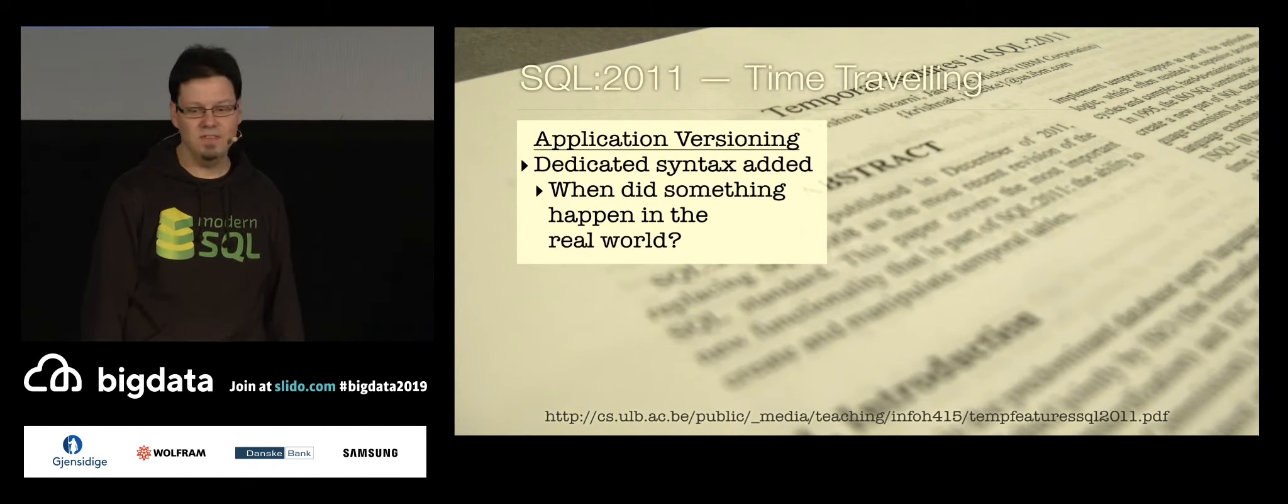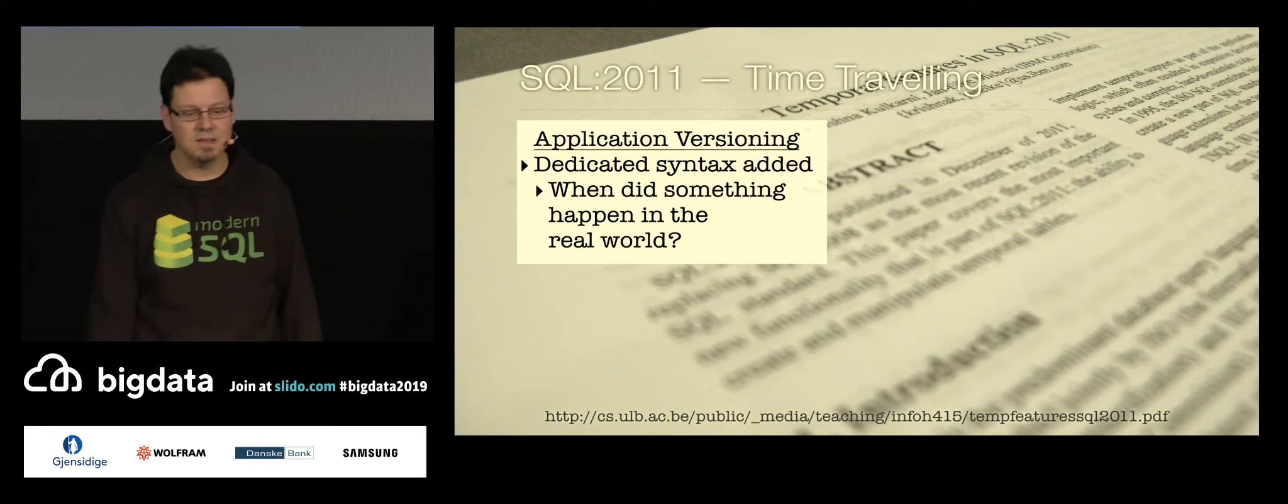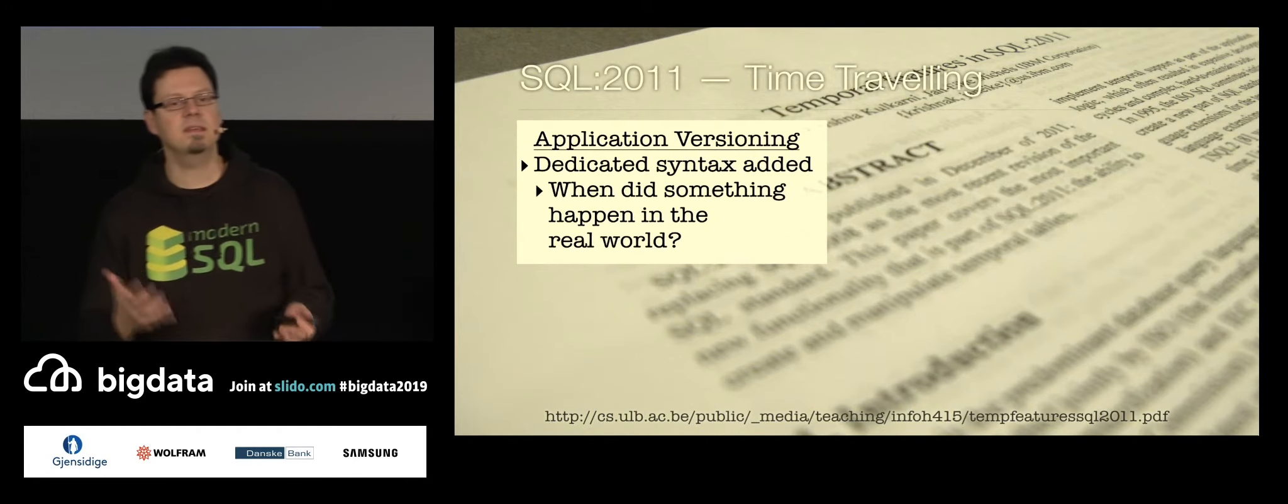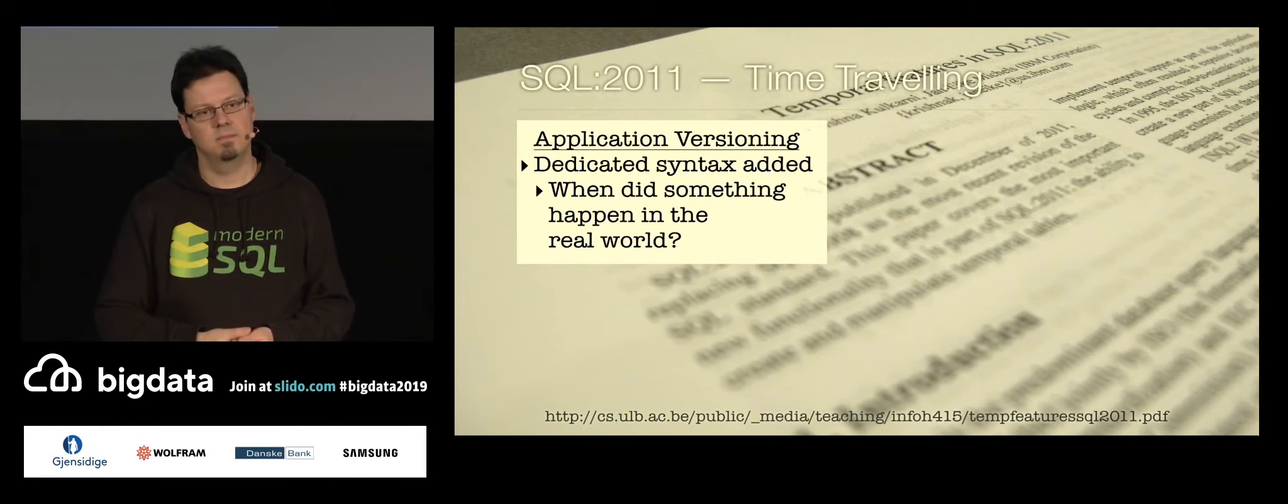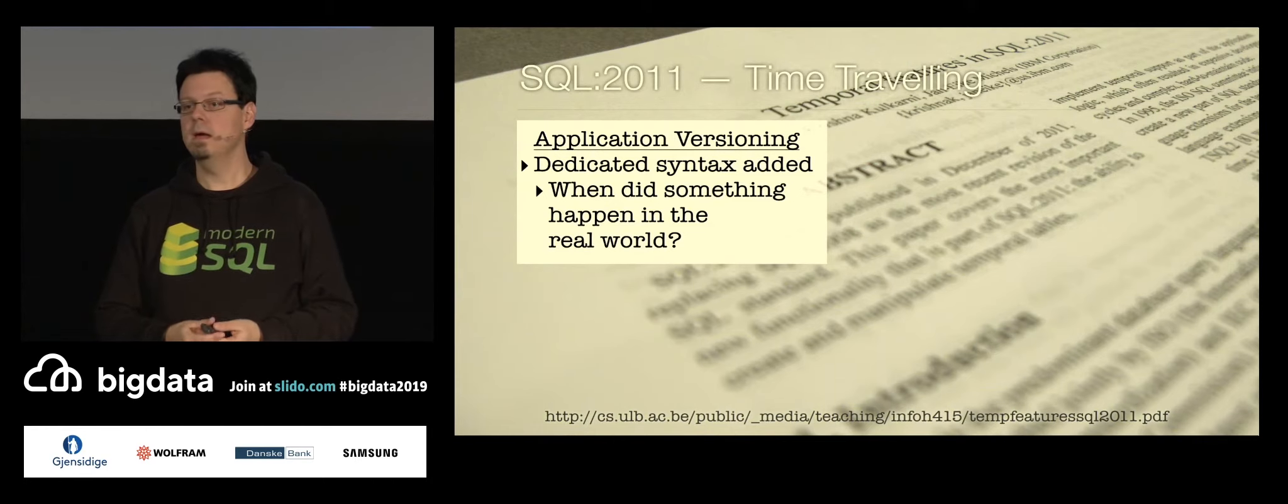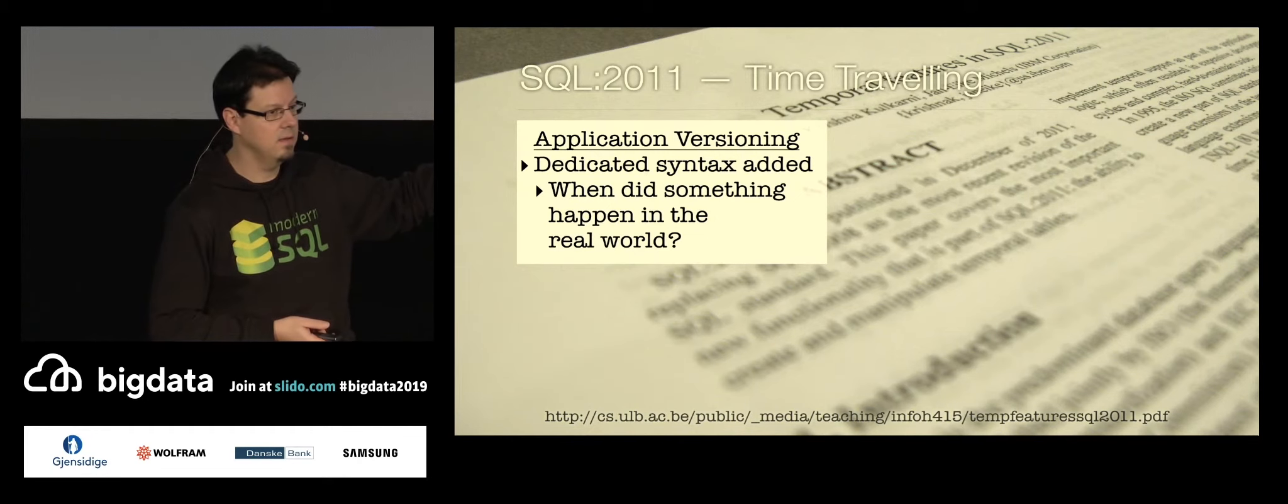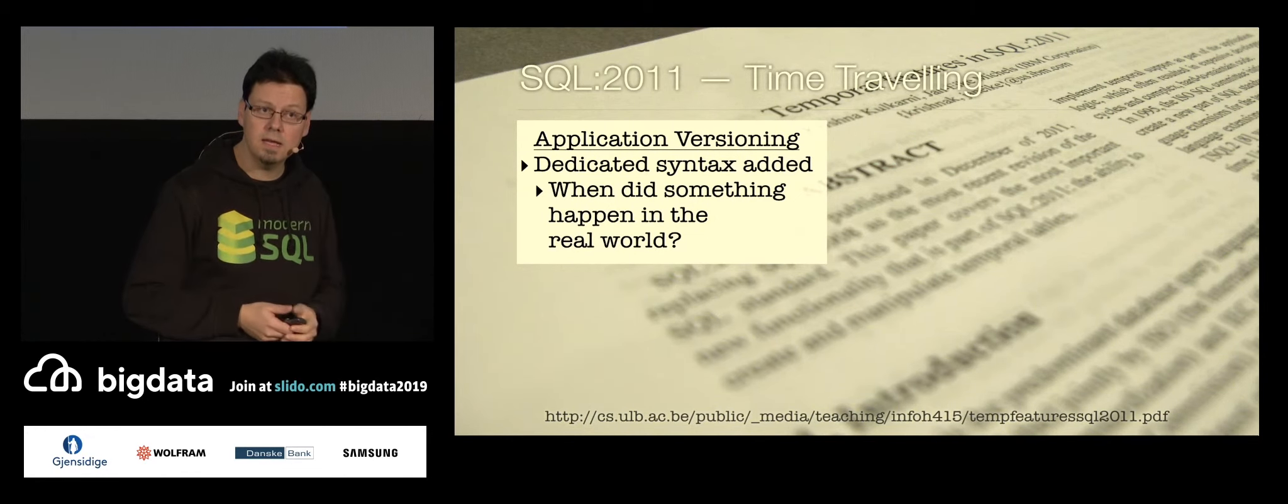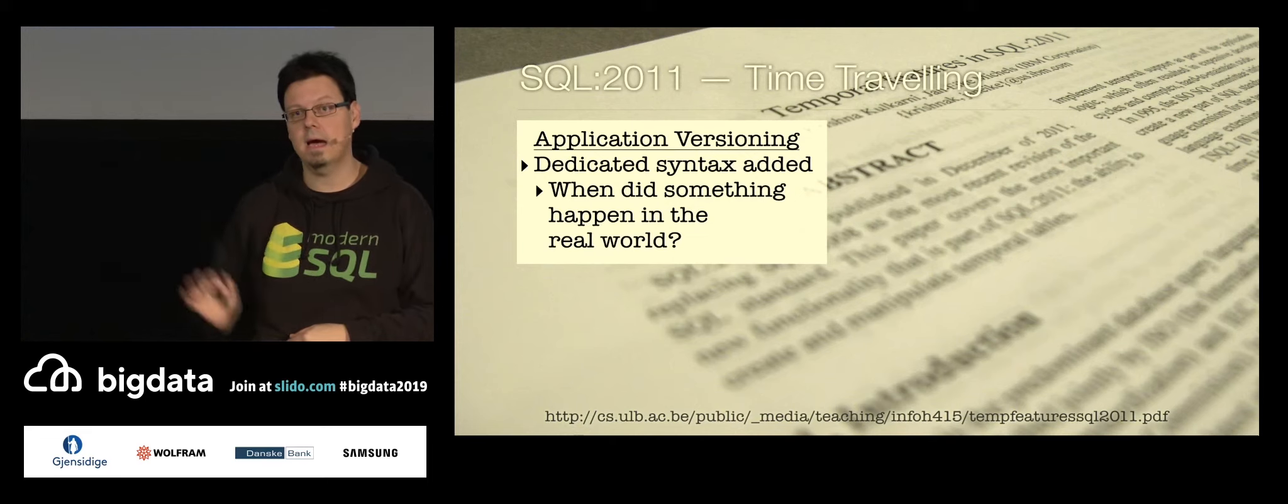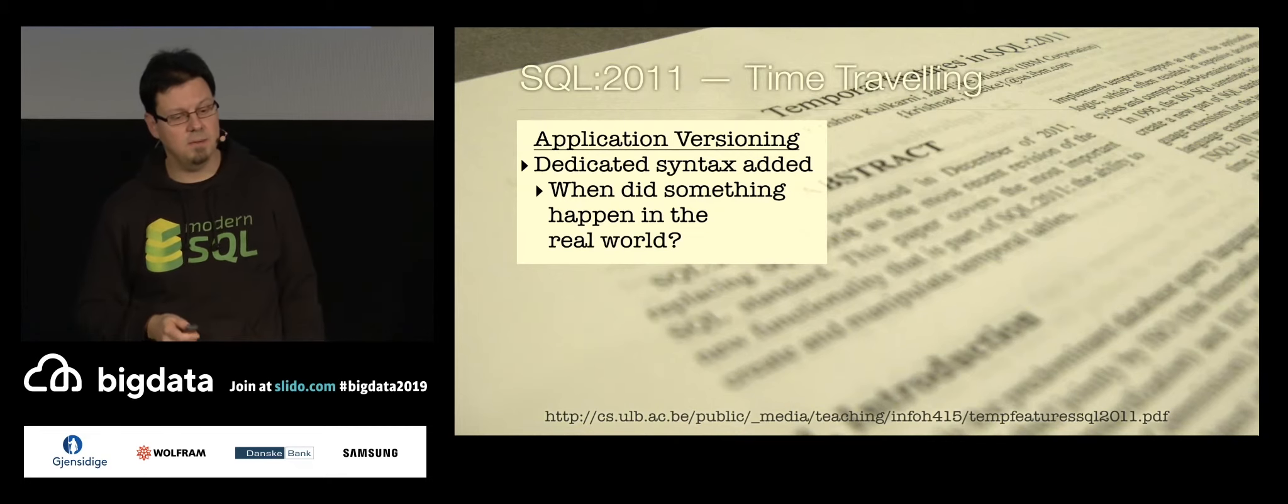What does it mean, time traveling? It's basically about things like keeping track of changes. When clients, customers, whoever, change, let's say, their name, when you just update it, then the old data is gone. This is the old way of SQL. And now we have a way where we can keep the old data and then later on ask for, how did that data look like at that point in time? Time travel queries on two time accesses. So the first one is application versioning. And that is used to model how the real world actually evolved.